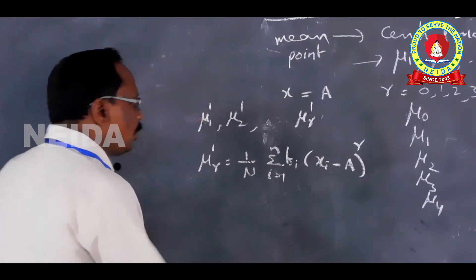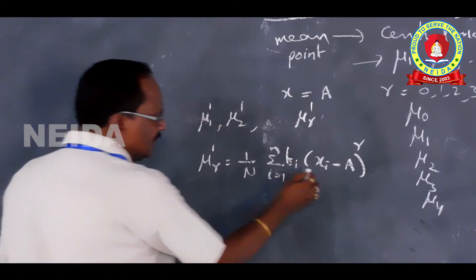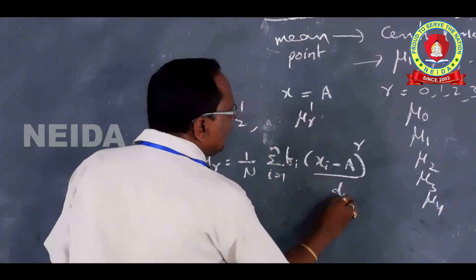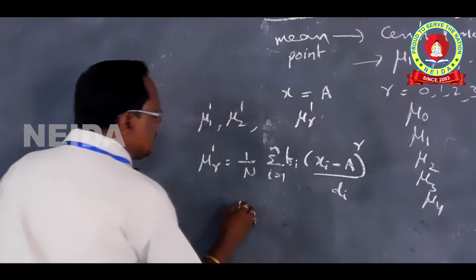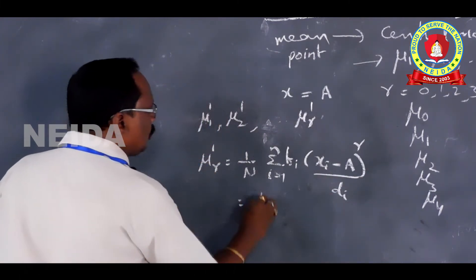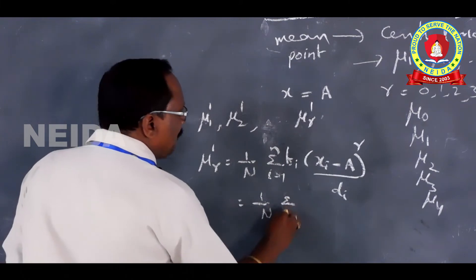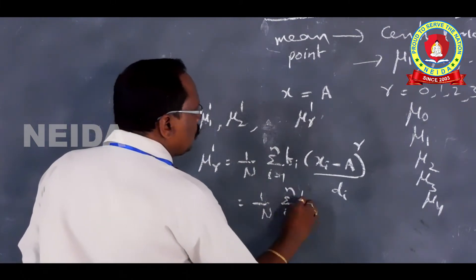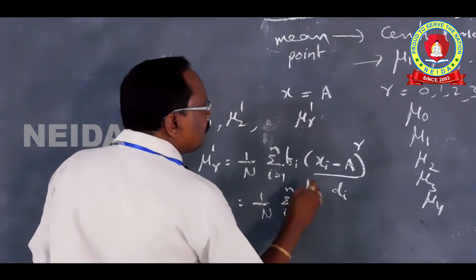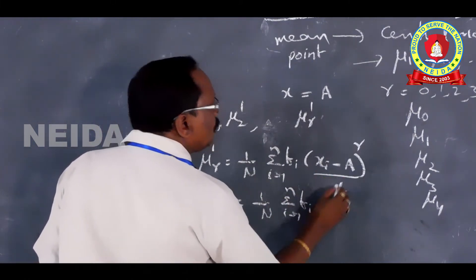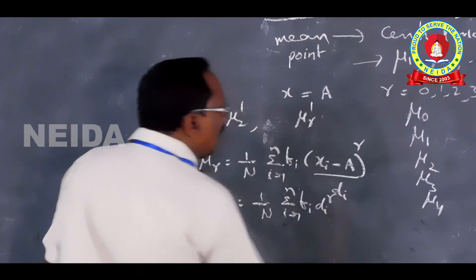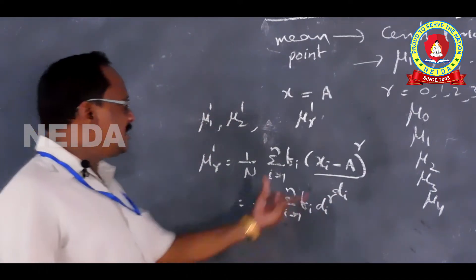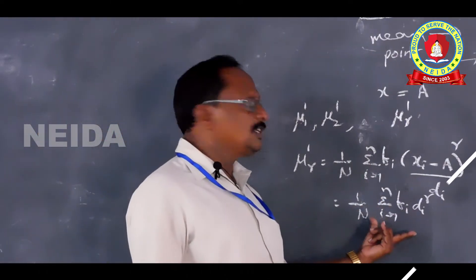The formula for non-central moments is: μᵣ' = (1/n) Σᵢ₌₁ⁿ fᵢ(xᵢ − A)ʳ, where A is any arbitrary point, as opposed to the mean x̄ used in central moments. If we let dᵢ = xᵢ − A, this becomes (1/n) Σ fᵢ · dᵢʳ. We can use either form.